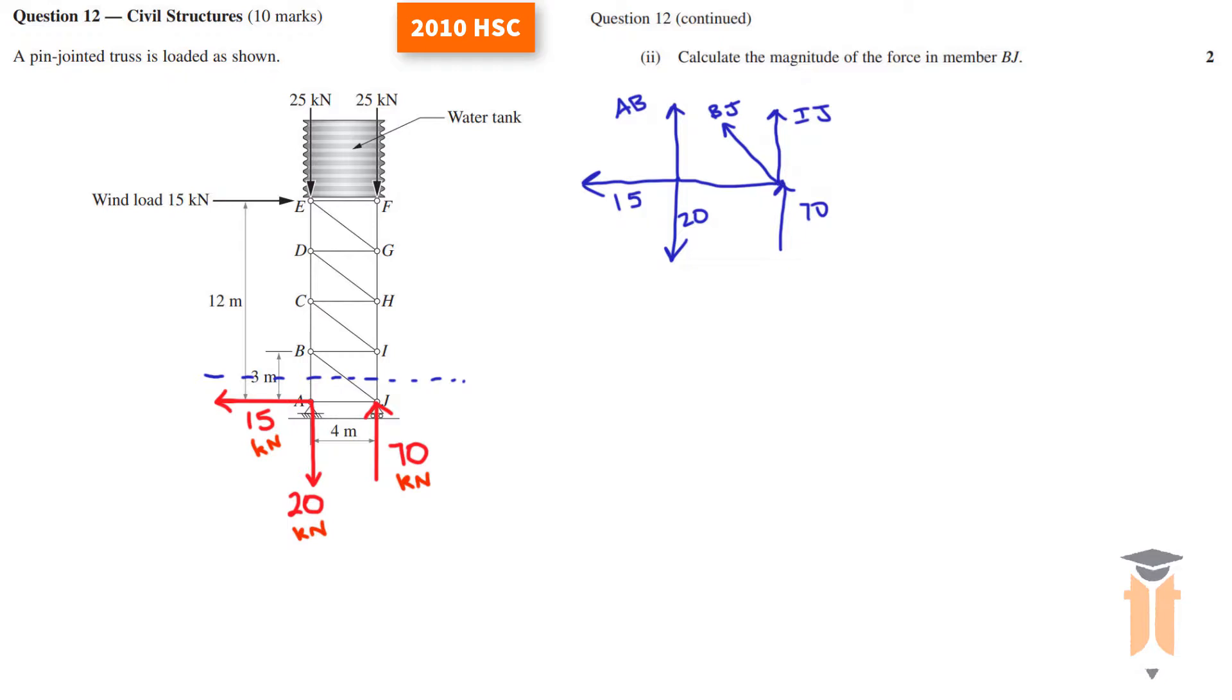Once I've drawn the free body diagram, I need to decide which equation I'm going to use to solve the force in BJ. We have three equations: sum of forces in the vertical direction, sum of forces in the horizontal direction, and sum of moments. We're going to utilize the two sum of force equations and see which one works. If I do sum of forces in the vertical, I have AB which I don't know, IJ which I don't know, and the vertical component of BJ which I also don't know. So we have three unknowns and it's almost impossible to calculate the force in BJ.